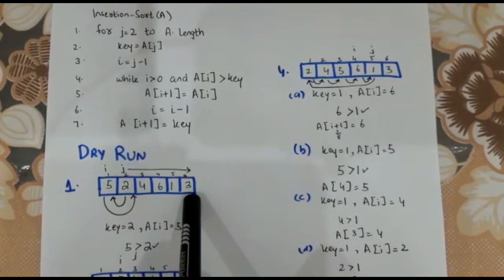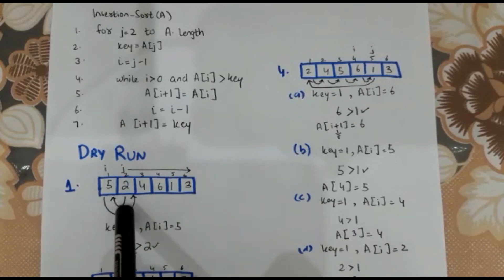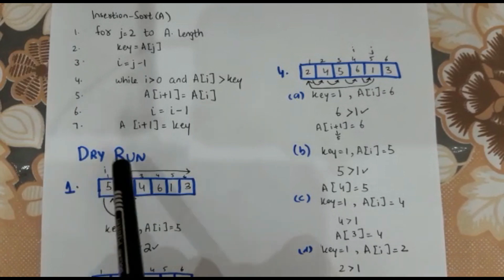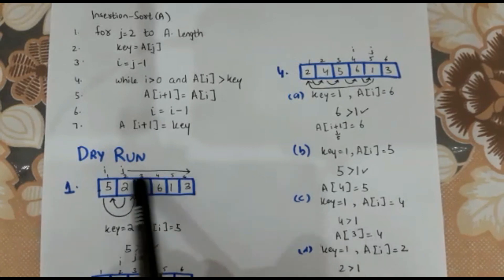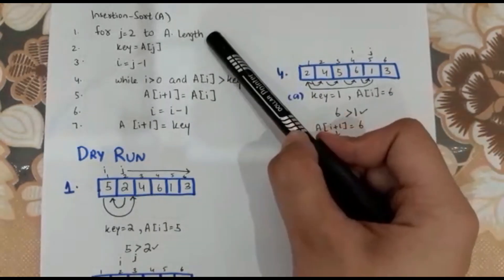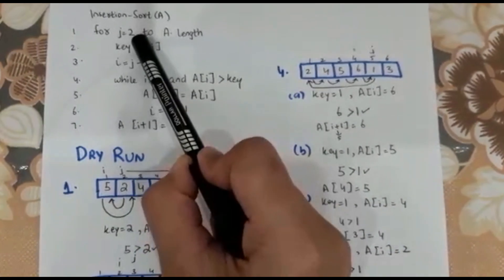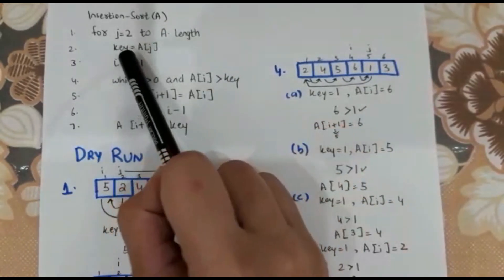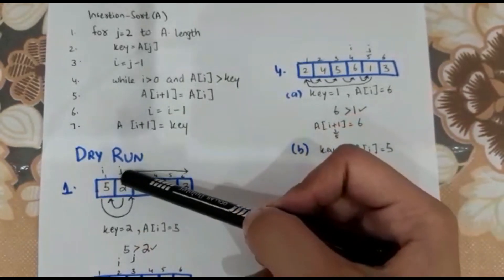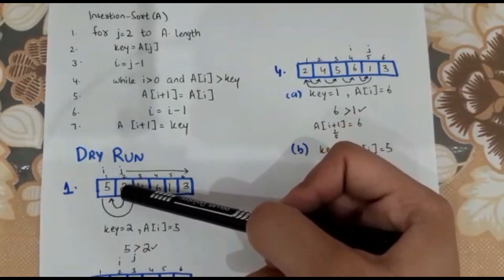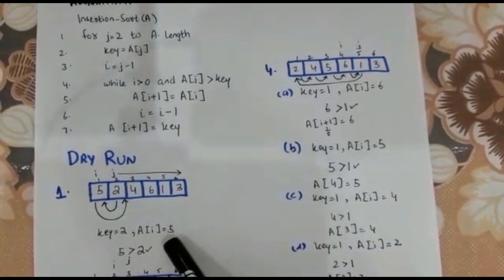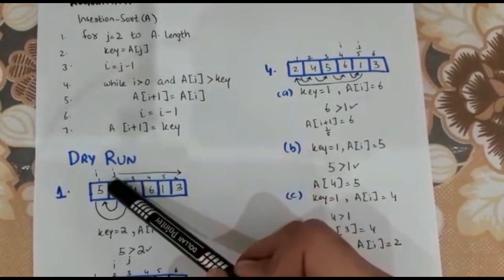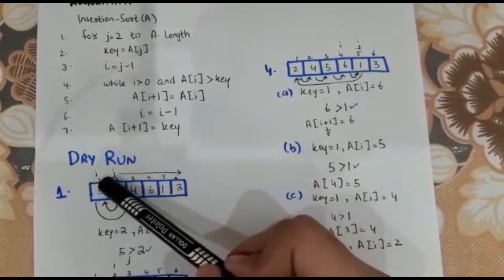We have the full array with elements 5, 2, 4, 6, 1, 3, which we have to arrange in sequence. The indices are 1, 2, 3, 4, 5, and 6. Now let's start the loop body. Our j starts at index 2. We assign the value at array index j to key — j is 2 and the element there is 2, so key equals 2. Then i equals j minus 1, which is 2 minus 1 equals 1.